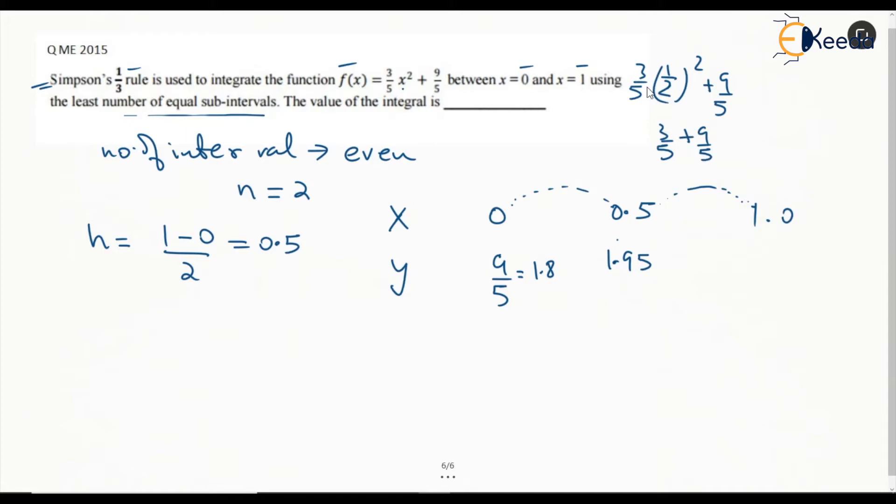For Simpson's one-third rule, we know that the formula for integration is h/3 times [y₀ plus 4 times all the odd terms, which in this case is only y₁, so 4 times y₁, plus 2 times the even terms].